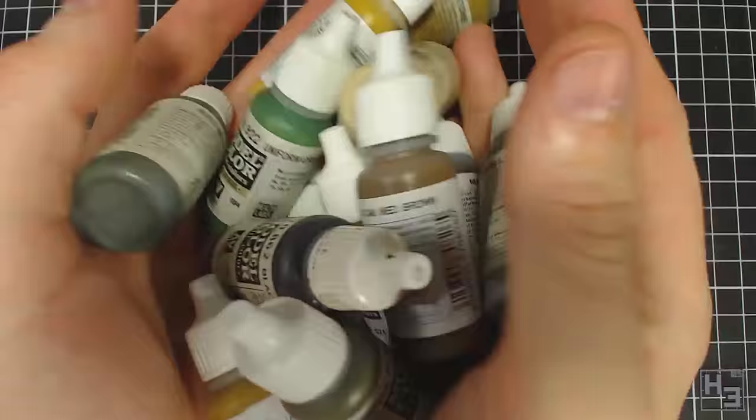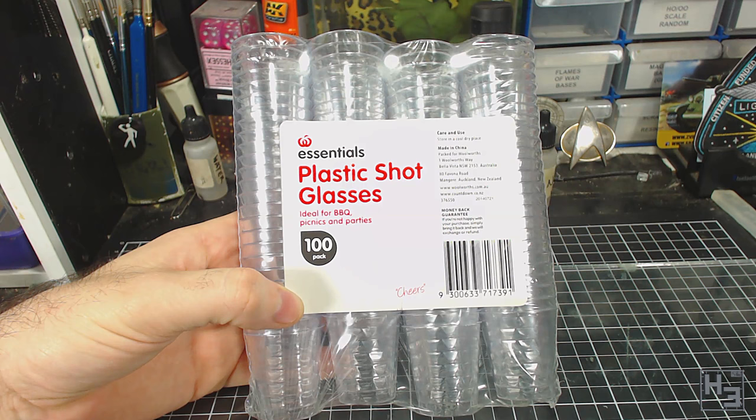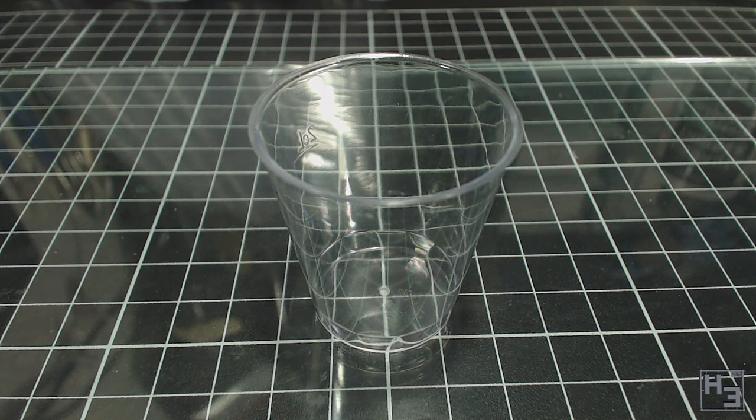As a mixing container I like to use cheap plastic shot glasses. These usually come in packages of a hundred. They're great for mixing paint in, or other small quantities of whatever things you want to mix, like glue, mixes of grit, casting resin and lots of other things too.